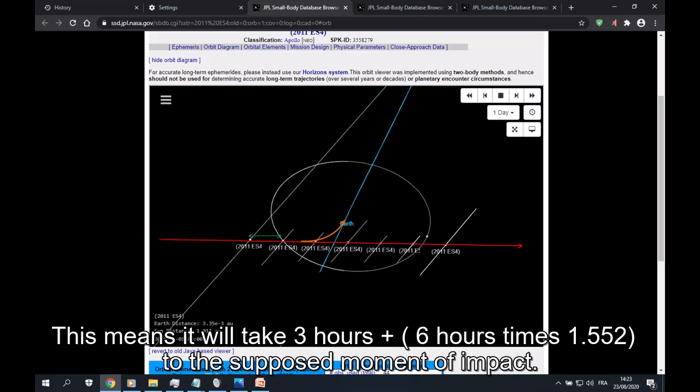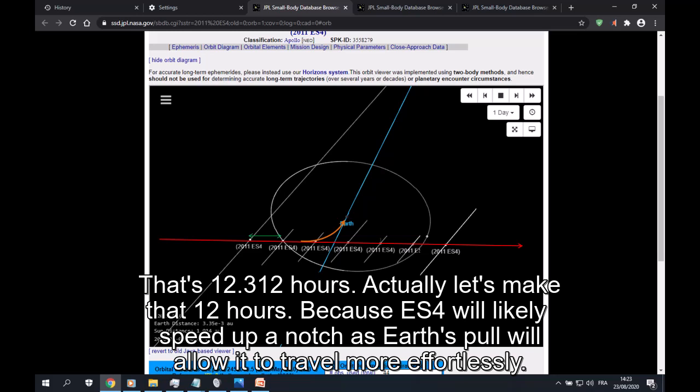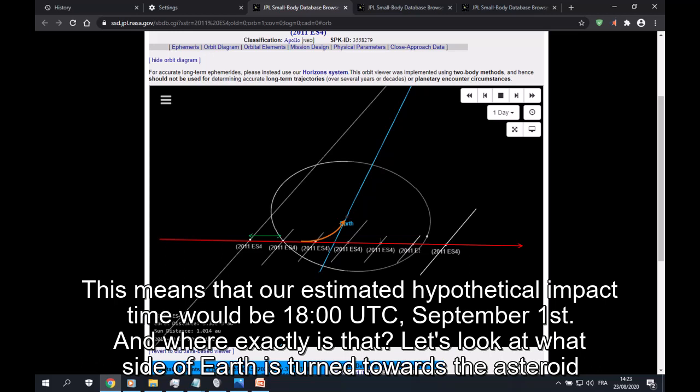This means it will take 3 hours plus 6 hours times 1.552 to the supposed moment of impact. That's 12.312 hours. Actually let's make that 12 hours, because ES4 will likely speed up a notch, as Earth's pull will allow it to travel more effortlessly. This means that our estimated hypothetical impact time would be 1800 hours UTC. And where exactly is that?